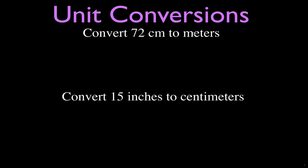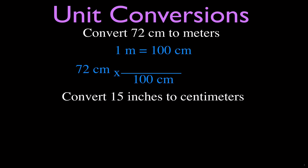Now convert 72 centimeters to meters. Notice that 72 centimeters is less than a meter, so your answer should be less than one. The conversion factor: one meter equals 100 centimeters. Write down 72 centimeters, put 100 centimeters in the bottom, one meter on top. Cancel the centimeters and you get 0.72 meters — which is indeed less than one meter.